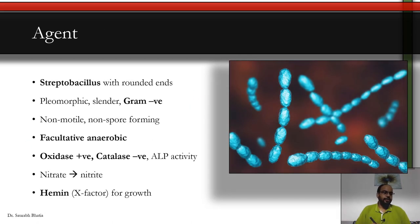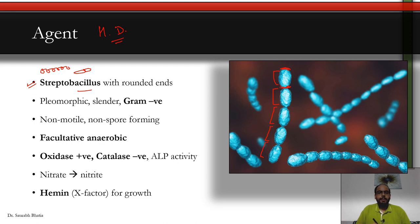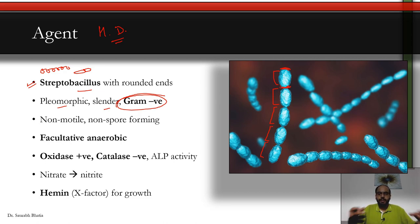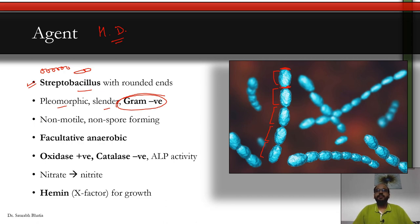Haemophilus ducreyi is a streptobacillus — 'strepto' means arranged in rows, 'bacillus' means rod-shaped — so these are rod-shaped bacteria arranged in rows or lines. The ends are rounded and it is pleomorphic, meaning multiple shapes can occur. It is a slender gram-negative bacillus. Gram staining from ulcer exudate can provide a presumptive diagnosis of chancroid, though false positives and negatives are possible due to other genital bacteria.